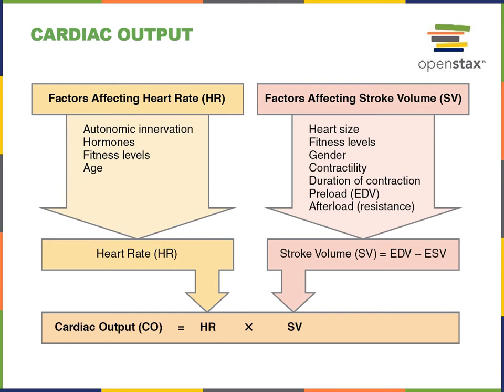Stroke volume is equal to end diastolic volume minus end systolic volume. The end diastolic volume is the volume of blood in a ventricle at the beginning of ventricular systole and throughout isovolumetric contraction. And end systolic volume is the volume of blood in a ventricle at the beginning of diastole and throughout isovolumetric relaxation.